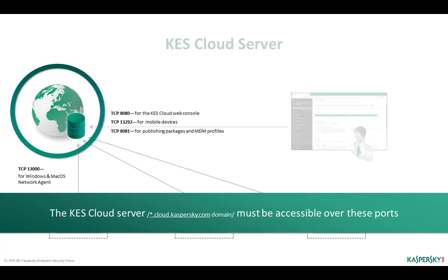From all managed mobile devices — Android and iOS — access is over TCP 13292. The internal web server of Kaspersky Endpoint Security Cloud will distribute installation packages and MDM profiles over TCP 8081. Therefore, at the first connection, if you do not want to consider another method of delivering packages — and for an MDM profile it is impossible anyway — make sure that Kaspersky Endpoint Security Cloud server is accessible over TCP 8081.